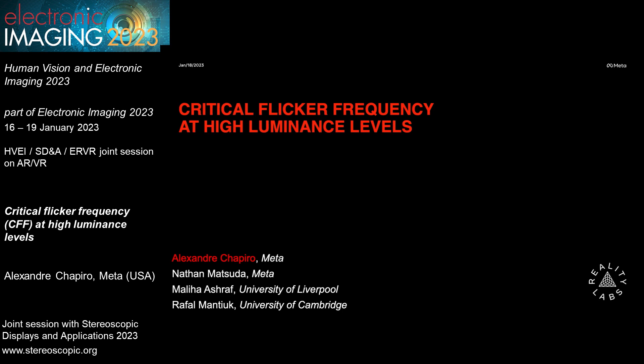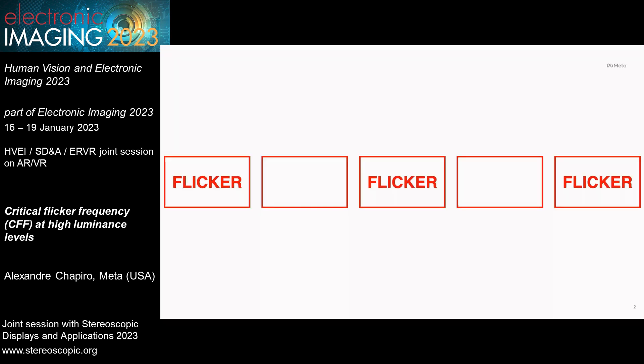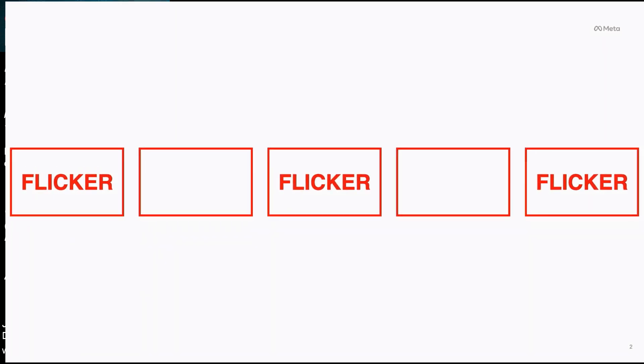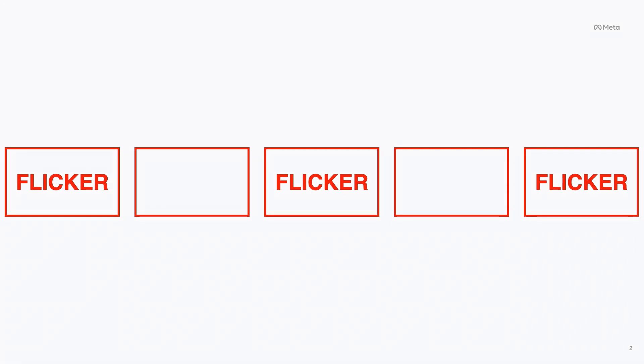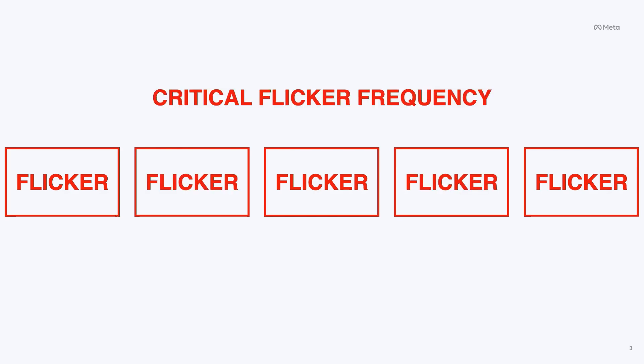I'm going to talk today about flicker and the critical flicker frequency. Flicker occurs for a light source that has a refresh, like a display or some types of indoor lighting, when the refresh rate is too low and instead of looking like a stable, continuous source, it appears to be flickering. The critical flicker frequency is the refresh rate at which that stops happening and things appear continuous.